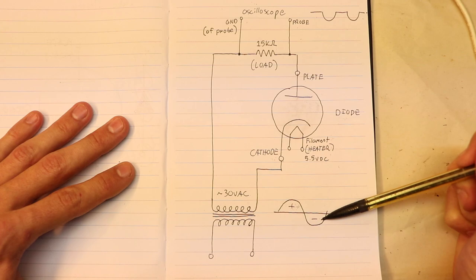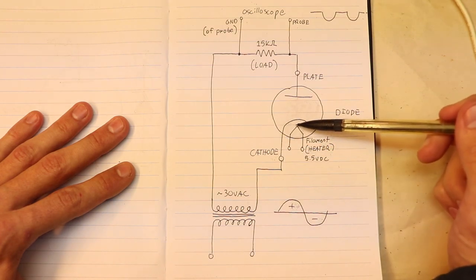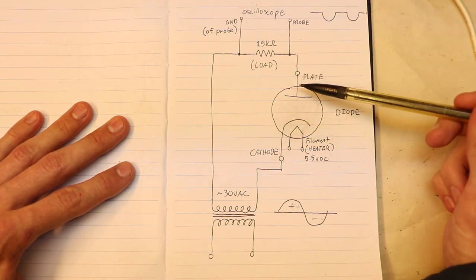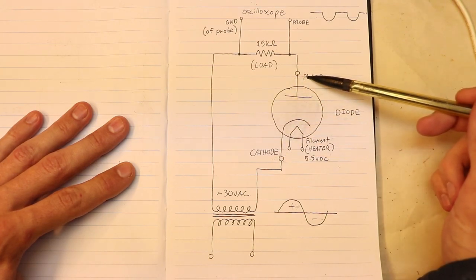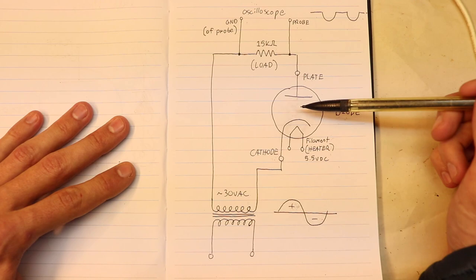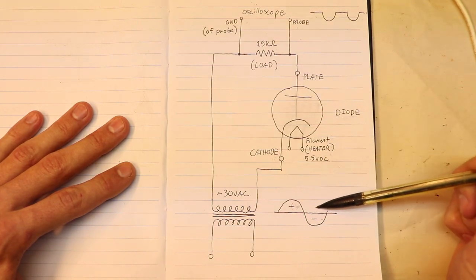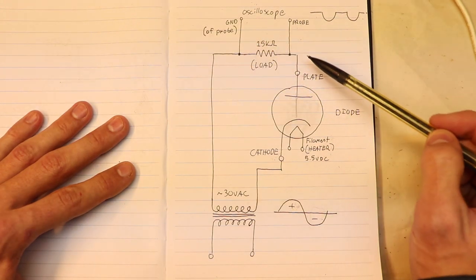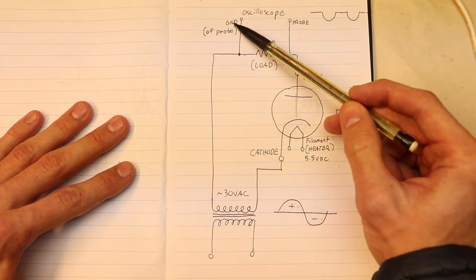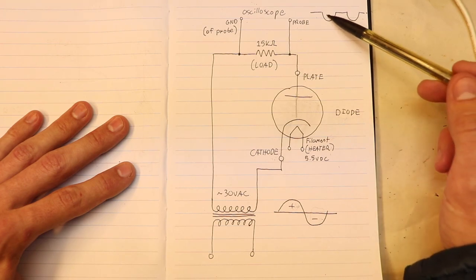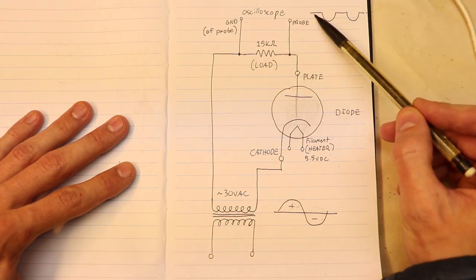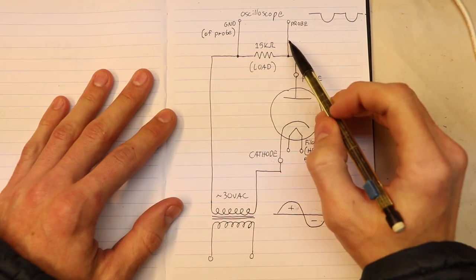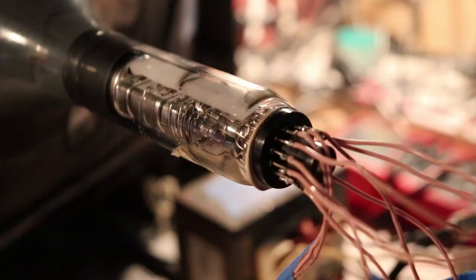When the cathode turns negative, all the electrons are pushed away because like charges repel. As a consequence, the plate is also positive since the cathode is negative. So the plate actually attracts those electrons that are being repelled, and you actually have an electrical connection on the negative cycle of this wave. If you connect your oscilloscope to the dummy load with the probe on the plate side and ground on the other side, you will see that the negative portion of the wave is coming through but the positive side is being cut off.